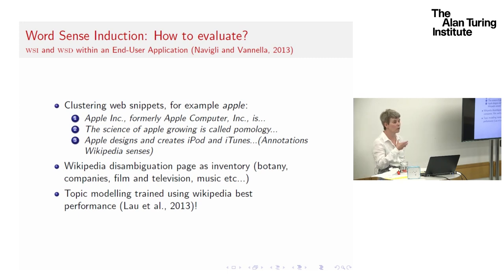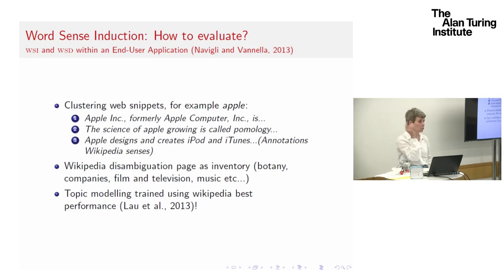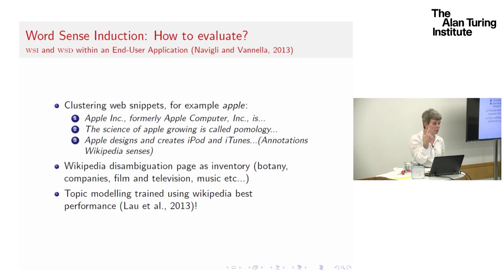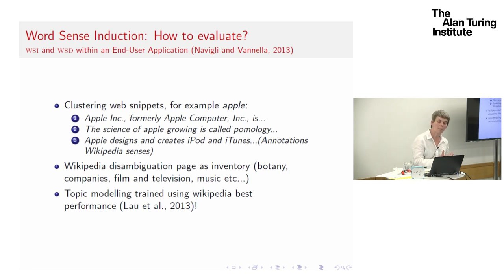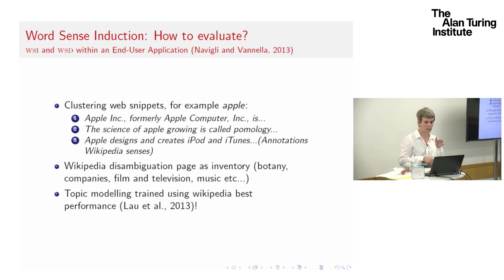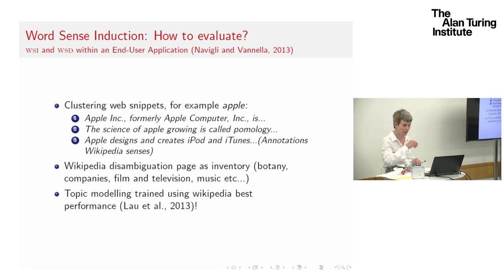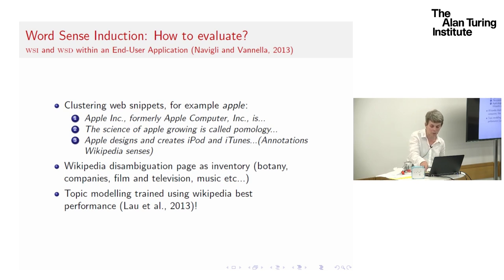There's also been a word sense induction task within the context of an application, based on using retrieval queries and snippets — the system is asked to cluster those snippets. They used Wikipedia disambiguation pages as a kind of inventory, though it wasn't biased towards anyone who had used the Wikipedia sense inventory. The topic modelling system performed best; it was trained on Wikipedia but not on that sense inventory, so there are efforts to demonstrate word sense induction is useful for applications.